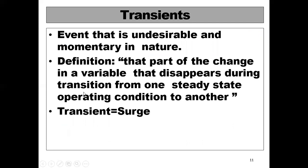What is a transient? A transient is an event that is undesirable and momentary in nature — meaning it does not continuously exist in the power system. It is a change in a variable that disappears during the transition from one steady-state operating condition to another.